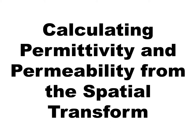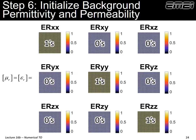The last step is to take those grids and calculate our permittivity and permeability from the transformed coordinates. We initialize our background permittivity and permeability — in a computer code you will have 18 two-dimensional arrays: nine for your permittivity tensor elements and nine for the permeability tensor elements. Here I'm initializing to free space: diagonal tensor elements all set to one, all off-diagonal elements set to zero, with permeability and permittivity set to be the same.